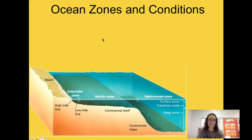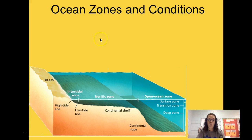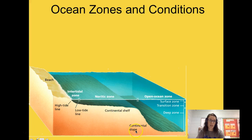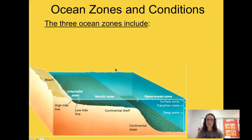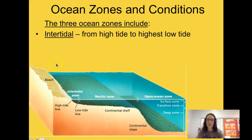On your notes, you have some ocean zones you need to know about. Your teacher may have mentioned these previously, since we've already gone over the vocabulary for the continental shelf and continental slope. The first zone we're going to talk about is called the intertidal zone. You can see the word 'tidal' in it, so you should be thinking about tides.